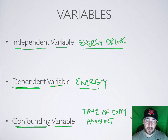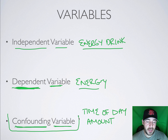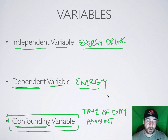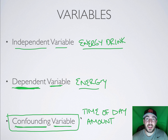Your general energy level for that day could be a confounding variable. You might have just had a better day during the day you had the Rockstar than the day you had the Red Bull. Confounding variables are just things that may have affected your dependent variable — variables are just things that may affect your project.